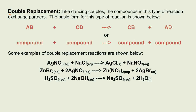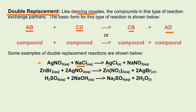Next is a double replacement. This is actually easier to understand — it's like dancing couples, where compounds in this type of reaction just change partners. So you have compound AB and compound CD, and they just switch places. For example, we have silver nitrate combining with sodium chloride to form two products: silver chloride and sodium nitrate.